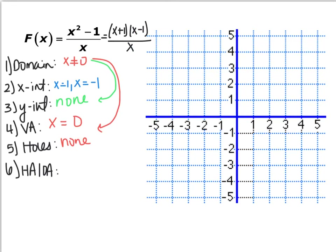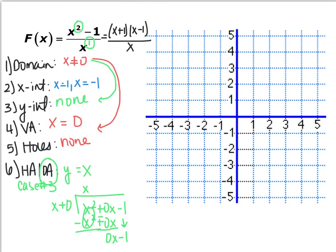For horizontal or oblique asymptotes: our numerator is 1 degree higher than our denominator, so that's case 3, which means we're going to have an oblique asymptote. We do polynomial division — what's in the numerator goes inside, what's in the denominator goes outside. Dividing x squared minus 1 by x gives just x; we don't care about the remainder. So our oblique asymptote is y equals x. Always write vertical asymptotes as x equals and horizontal or oblique asymptotes as y equals, because they're lines.